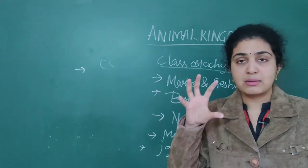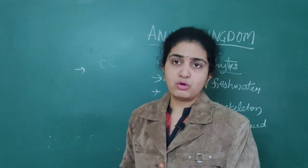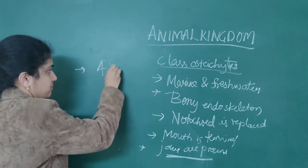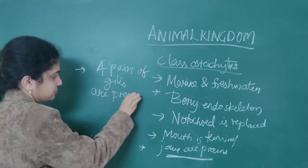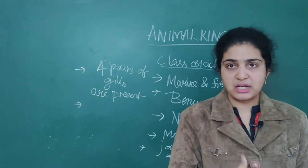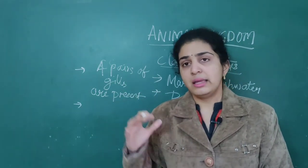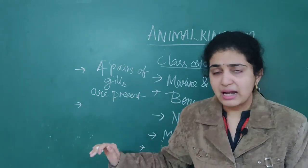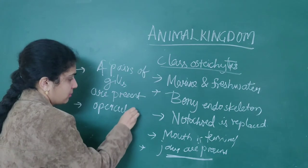Another important point is about respiration. Four pairs of gills are present in Osteichthyes, which are useful for respiration. In Chondrichthyes, operculum is absent, but in Osteichthyes, operculum is present. Air bladder is also present in Osteichthyes. Specifically the textbook states four pairs of gill slits are present, and operculum covers them.